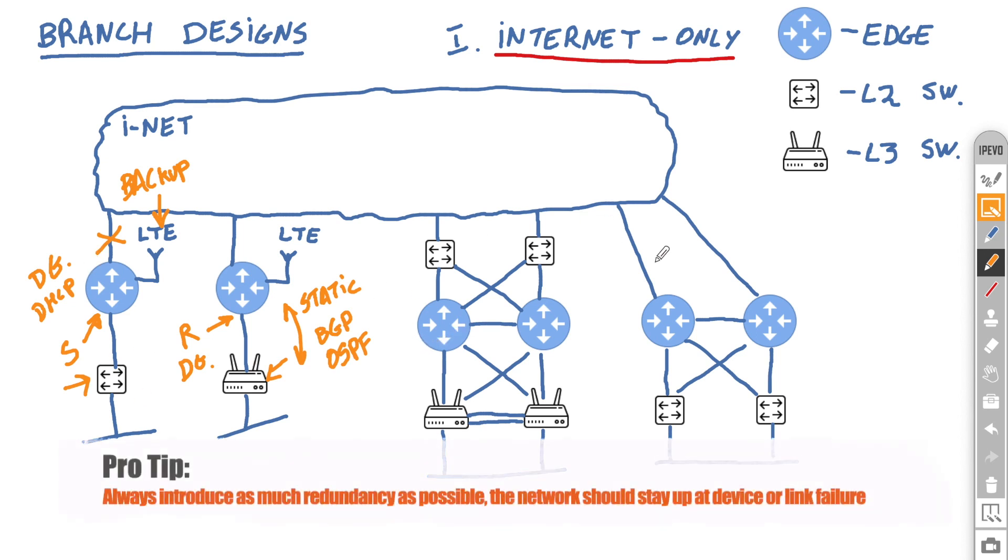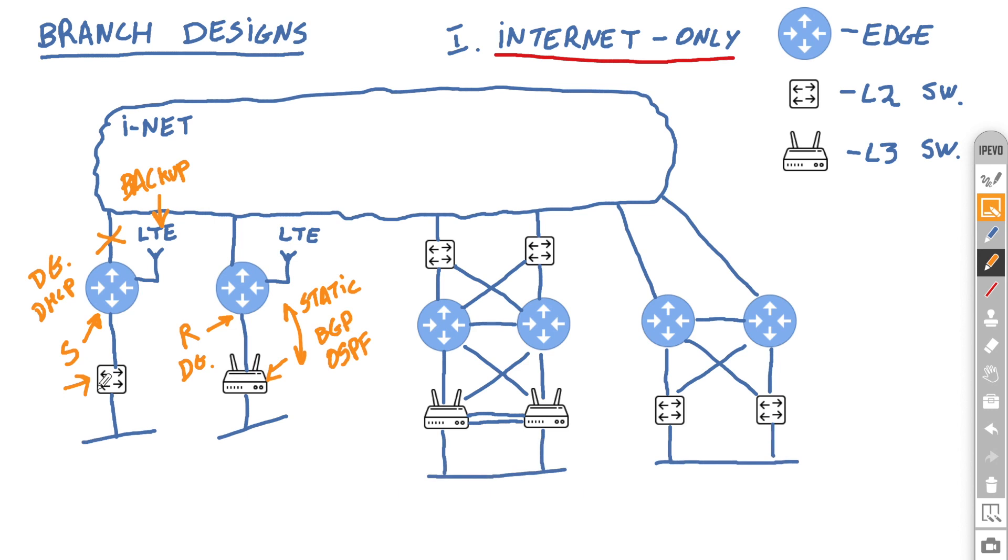My preferred designs are on the right hand side because as you can imagine, there are a lot of things here that can break. The edge, the cable, the switch and because of that, if even one of these elements breaks, you will lose the whole site. So going fully redundant allows you to still continue running the site even if a cable or a device fails.